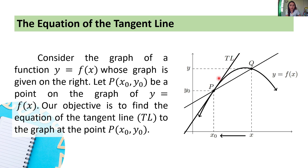As you can see here, the tangent line intersects our curve at exactly one point — at point (x₀, y₀). So that's what we're going to study: how to get the equation of the tangent line TL at point (x₀, y₀).